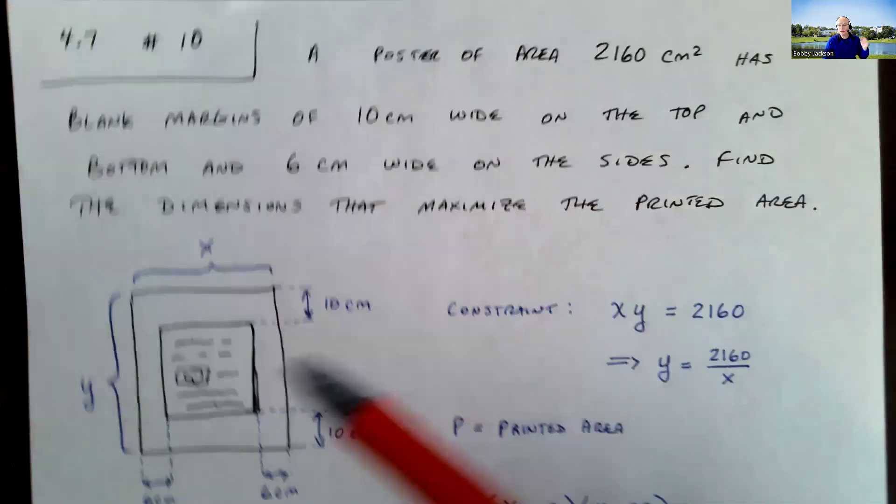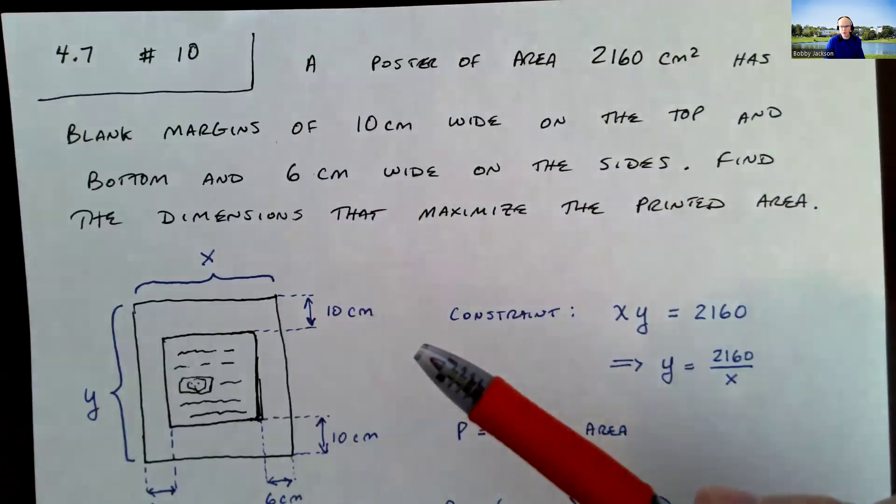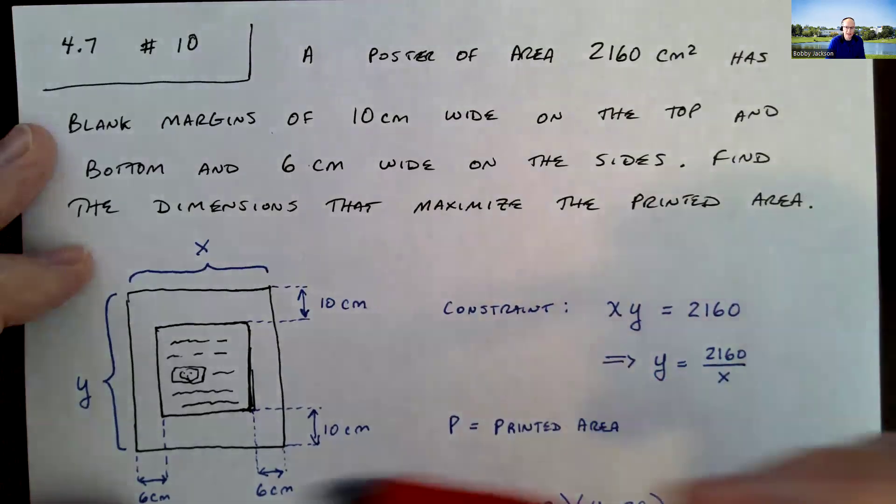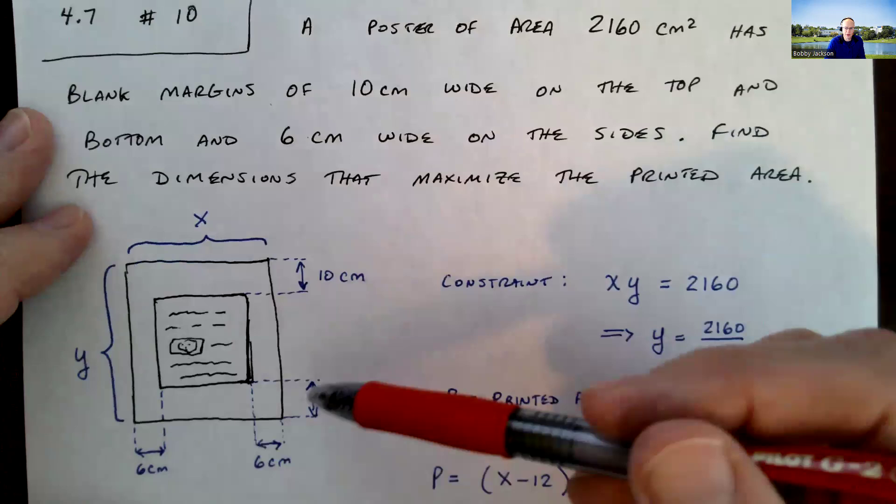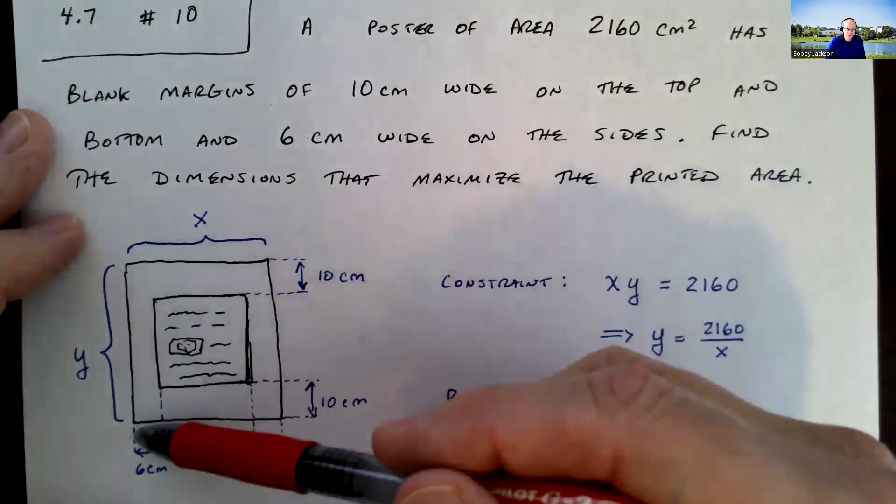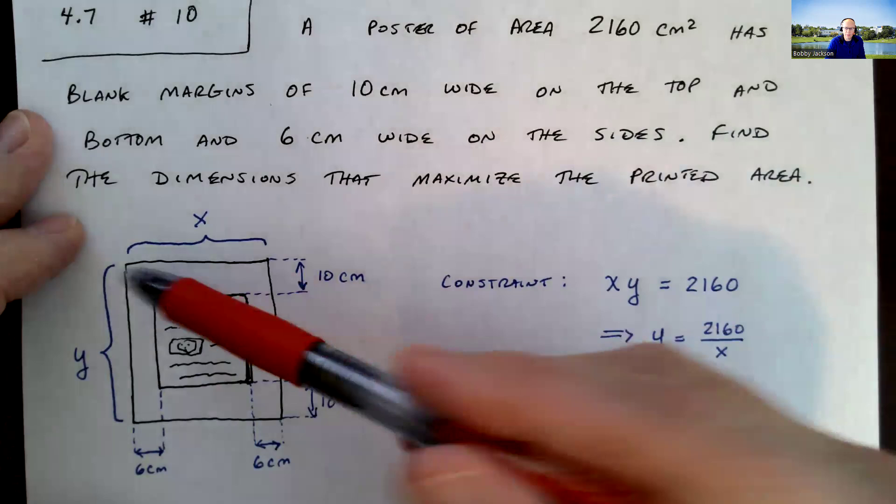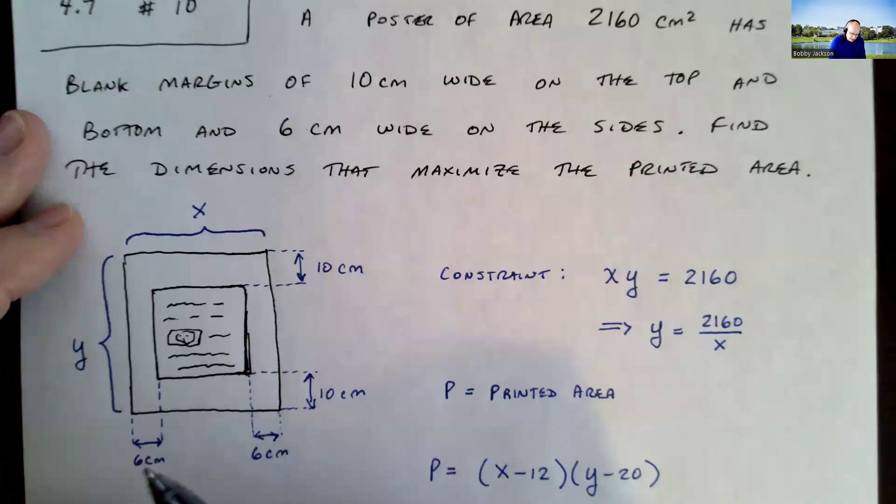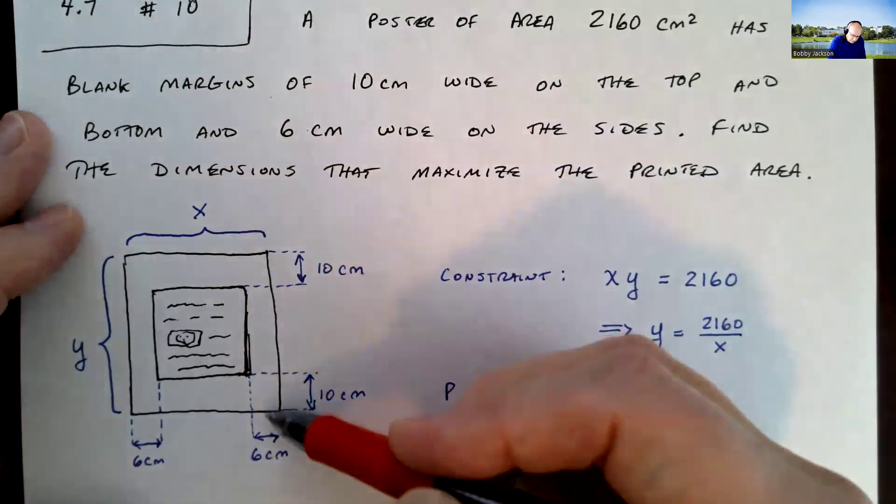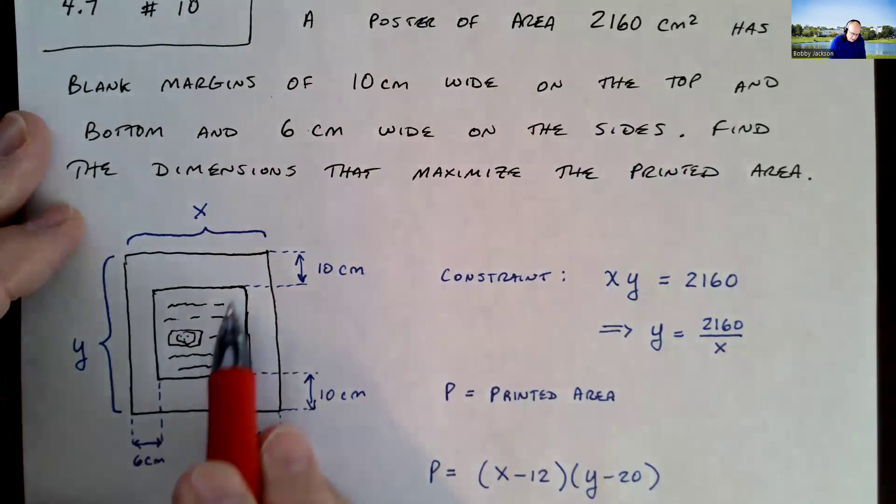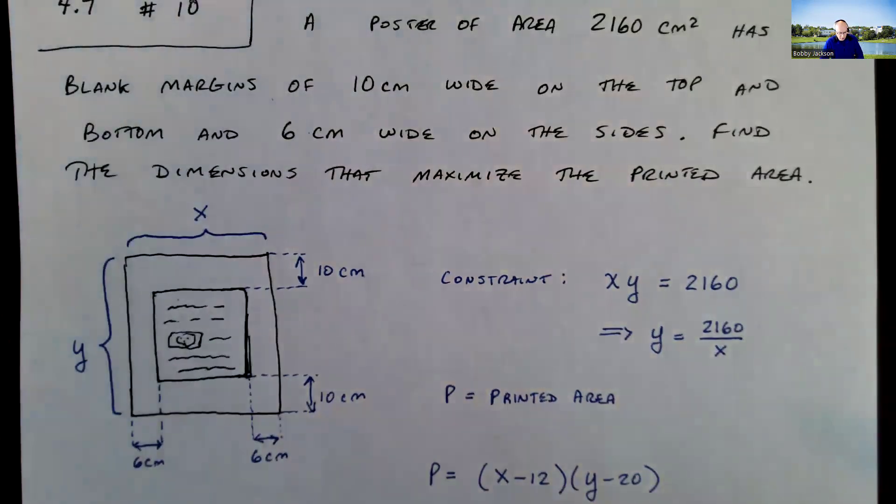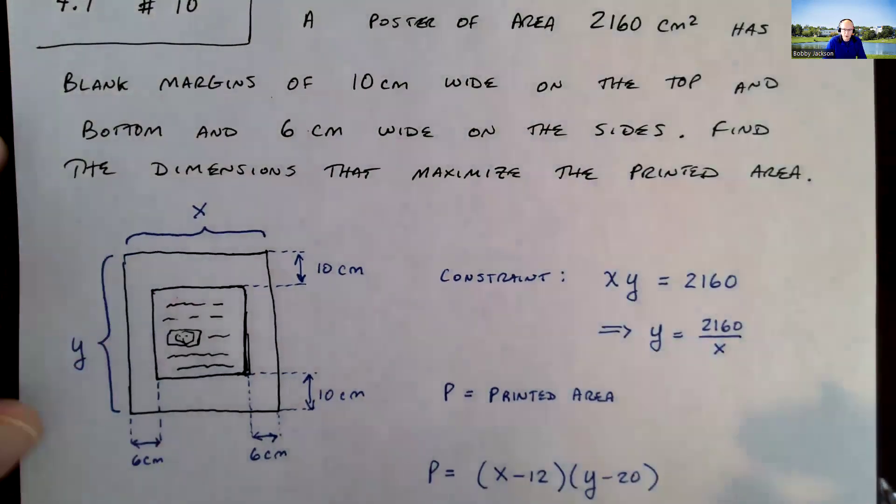We're going to find the dimensions that maximize the printed area. So the printed area would be the area that is inside all the margins. So I drew a little picture here to help. We've got the poster, rectangular in shape. We're going to assume that to be true. And then we've got margins on the top and bottom of 10 centimeters and on the sides here of 6 centimeters. So this area here would be our printed area. You know, we'd have words, picture, whatever.